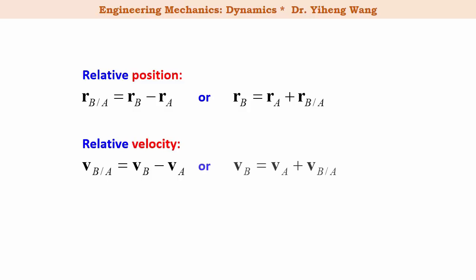And this can also be rewritten as v_B equals to v_A plus v_B/A. And similarly for acceleration, the relative acceleration B relative to A equals to a_B minus a_A, or it could be written this way. Keep in mind that all these equations are given in vector form.